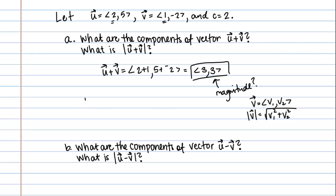In our case here, the magnitude of vector U plus V is going to be the square root of 3 squared plus 3 squared. That's the square root of 9 plus 9, or the square root of 18. We'll just leave it at that.